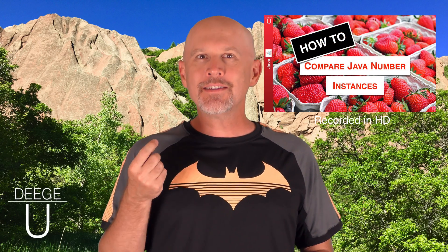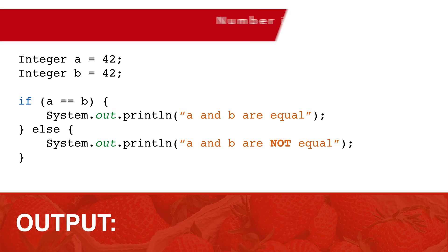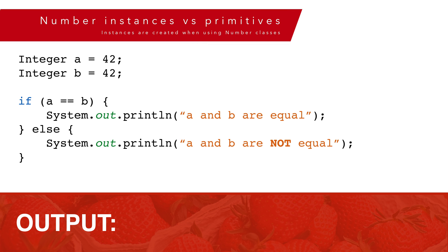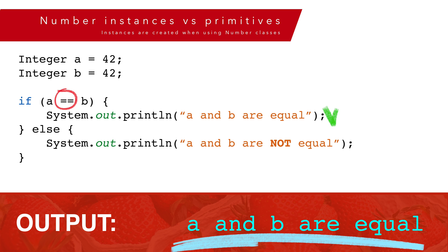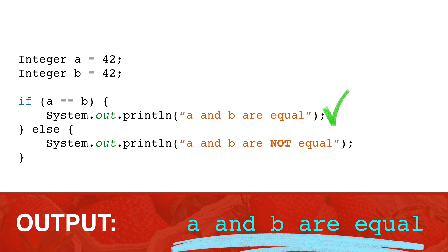For starters, since numbers are objects, we can't use the regular arithmetic operators. When we use primitive operators with objects, we're comparing instances, not the values inside the instance. Be careful, because sometimes you'll get tricked into thinking you're comparing values. For example, if we create two integer instances both with a value of 42, an equality comparison of the instances will return true. Java is doing some sneaky stuff behind the scenes.